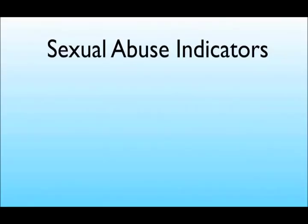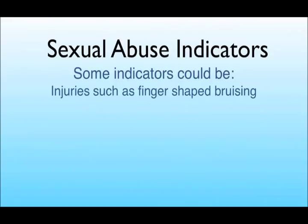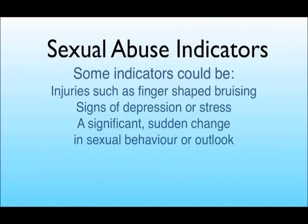Sexual activity is abusive if the person did not consent or the person is pressurised or tricked. Some of the indicators could be injuries such as finger-shaped bruising, signs of depression or stress, a significant sudden change in sexual behaviour or outlook, or the sudden onset of incontinence.